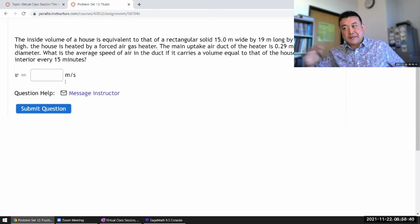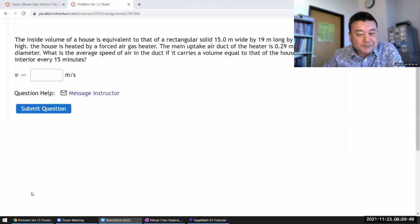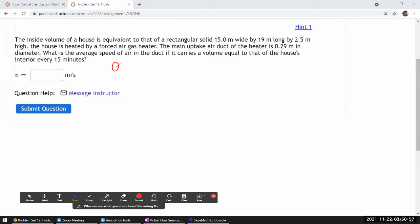Let me do it this way. I think if I just write down equations without explaining it, I can do it a lot more quickly. So reading this question, the way I would do it is: okay, here is a volume equal to that of a house interior. That's giving me a flow rate of that volume: 15 meter times 19 meter times 2.5 meter per 15 minutes—I'll do unit conversion later. And this flow rate must be the cross-sectional area times the fluid velocity, so this is pi times 0.29 over 2 squared.